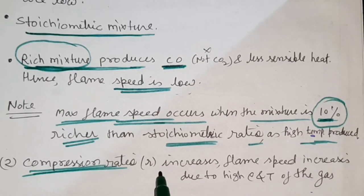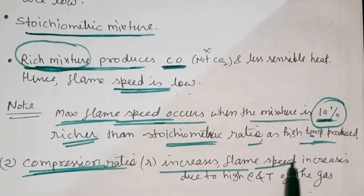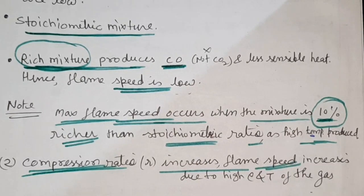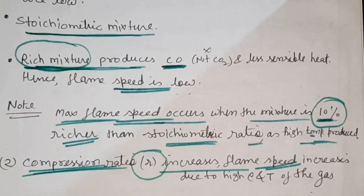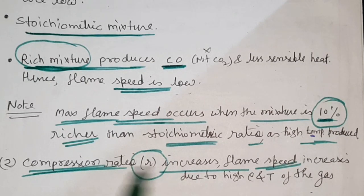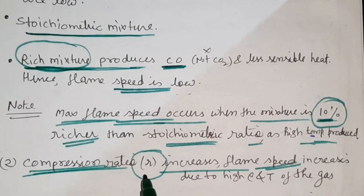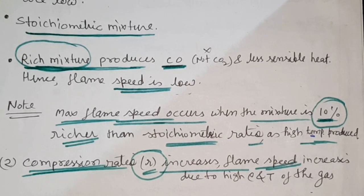The next parameter affecting flame speed is the compression ratio. With an increase in compression ratio, flame speed will be increased because the density and pressure both will be high in this situation.